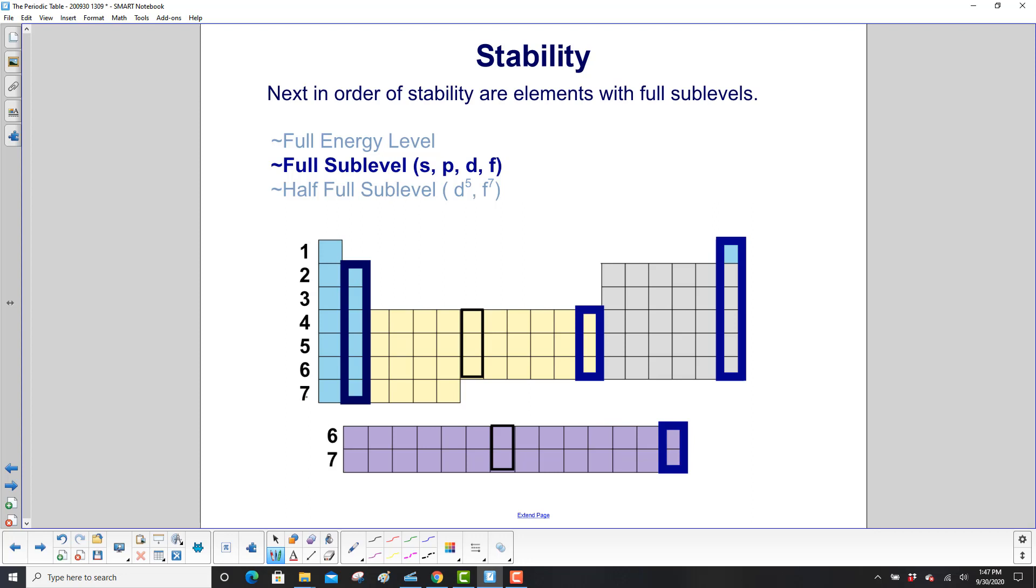Next in order of stability are elements with full sublevels. The full sublevels then will be S, P, D, and F, including the noble gases who have a full energy level, because that means they also have a full sublevel.